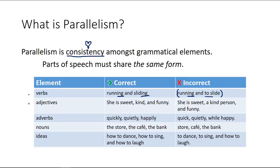Let's look at adjectives. She is sweet, kind, and funny — that is correct, all adjectives. Versus: she is sweet, a kind person, and funny. So this breaks the pattern by adding that 'a,' making it no longer parallel.